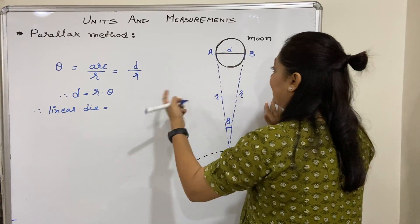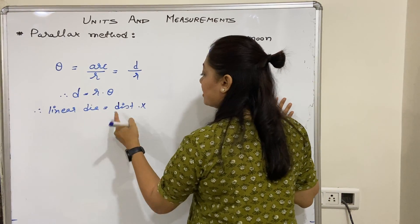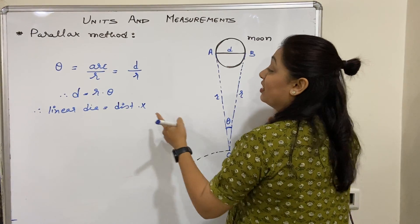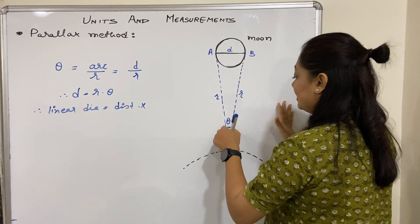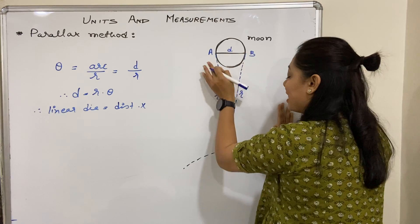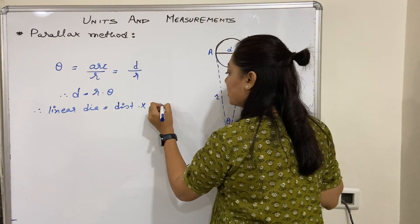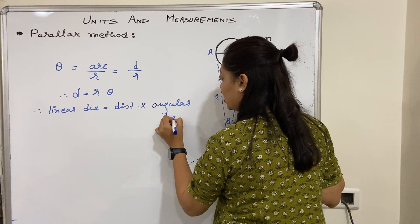So d equals distance r into theta. What is theta? Theta is the angle subtended by the arc, which is the same as the diameter. This is known as angular diameter.